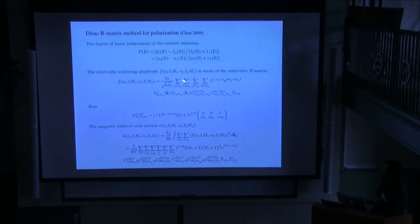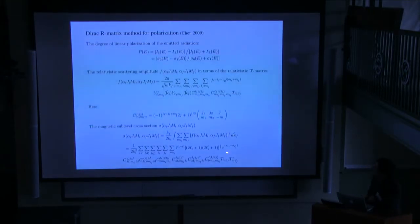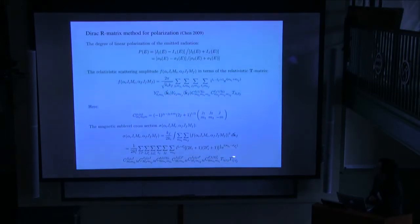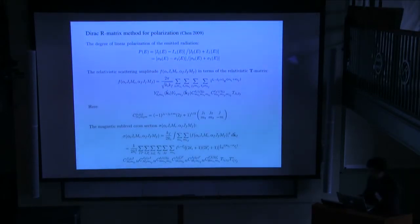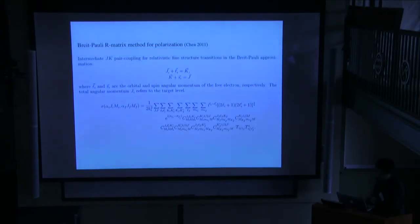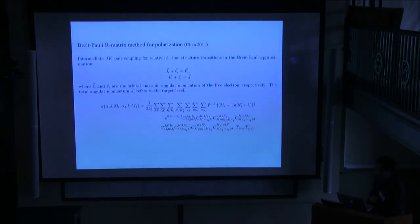This is the formula we use in the calculation of polarization. The key term is this relativistic T-matrix from the R-matrix. Using this formula we can get polarization, and we can see also the features in the polarization — the degree of polarization. This formula is the same as the previous slide except the T-matrix is from the R-matrix calculation.